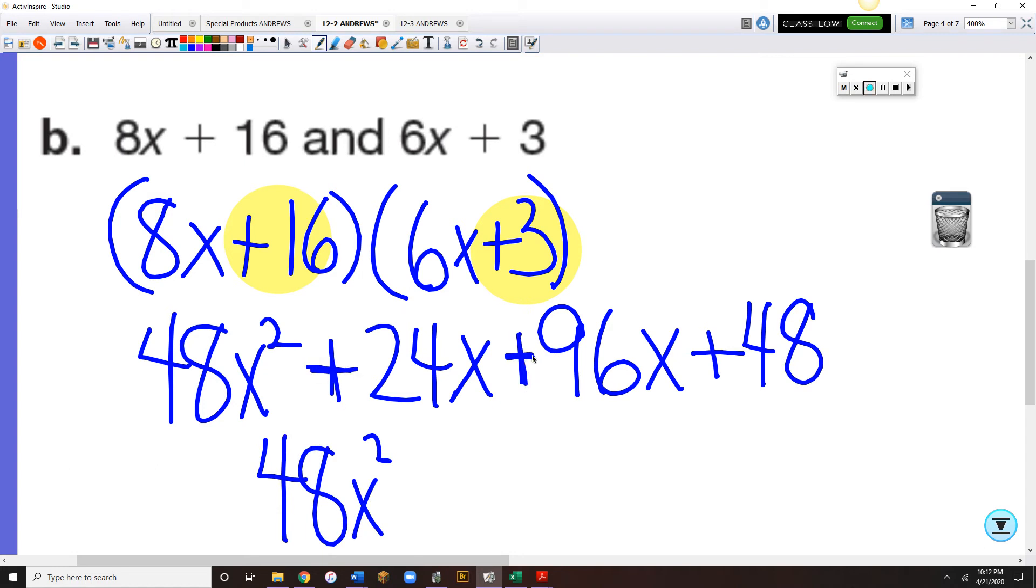So middle term has to be combined, 48x squared, 24 and 96, they are both plus, so 24x plus 96x is plus, let's see, 120x, and bring down our plus 48.